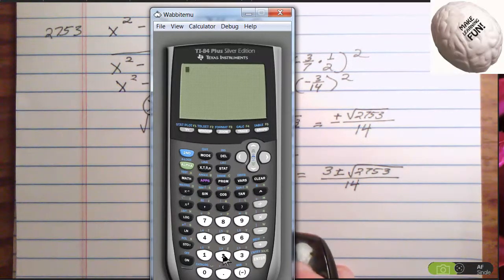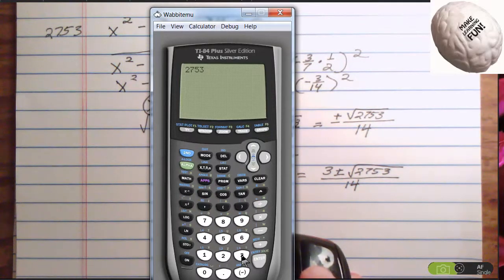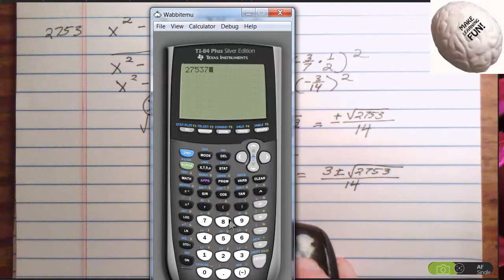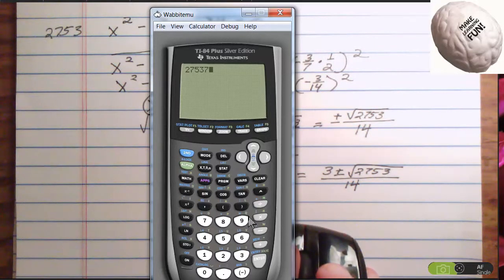Alright. How about 2753? I know 2 won't go into it. I know 5 won't go into it because it doesn't end in a 5 or a 0. Let's try 7. 2753. No, no, no, no, no.